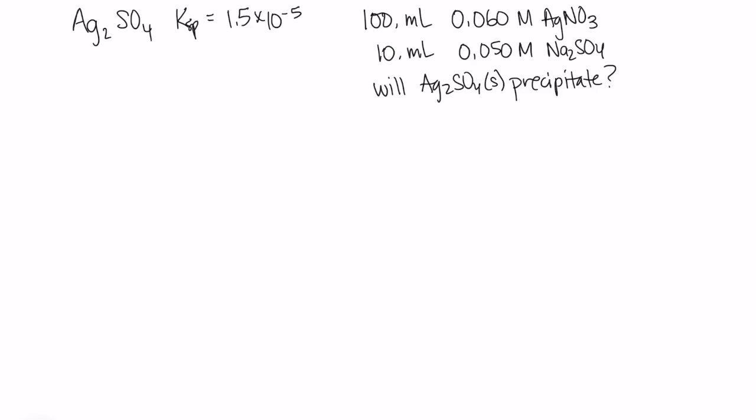So I'm going to need to find the concentration of Ag+. And to do this, we've got 0.1 liters times 0.06 moles per liter. And we're going to be dissolved in a total volume of 0.11 liters, 110 milliliters, when we mix these together. So my concentration of silver ions will be 0.0545 molar.